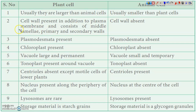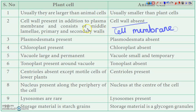Our second property is with respect to cell wall. In animal cells, cell wall is absent; the cell is enclosed in a thin flexible plasma membrane only. For plant cells, in addition to the cell membrane, a rigid thick cell wall is present, made up of cellulose, hemicellulose, and pectin, as already explained in the previous video.